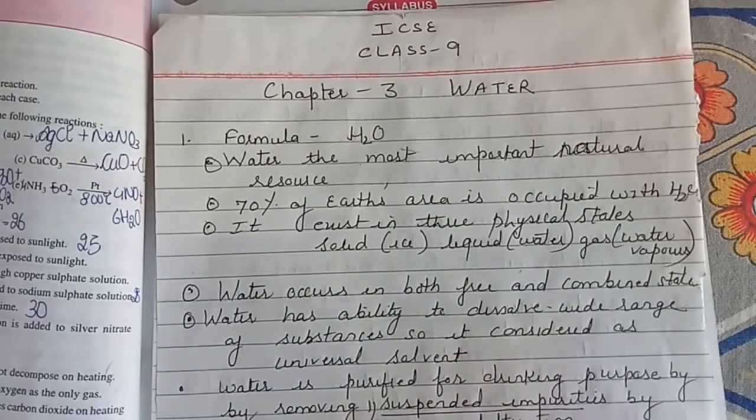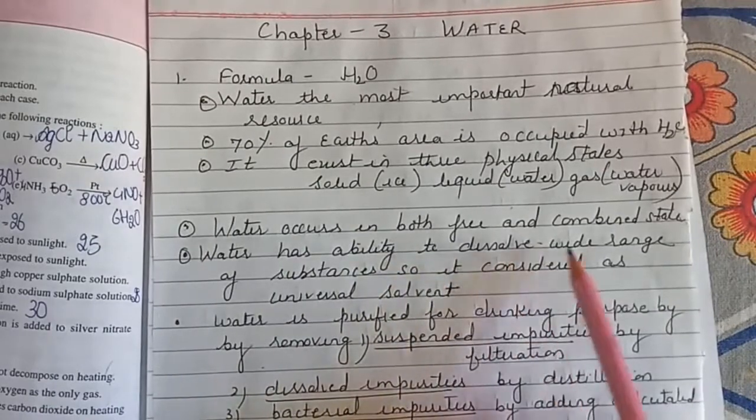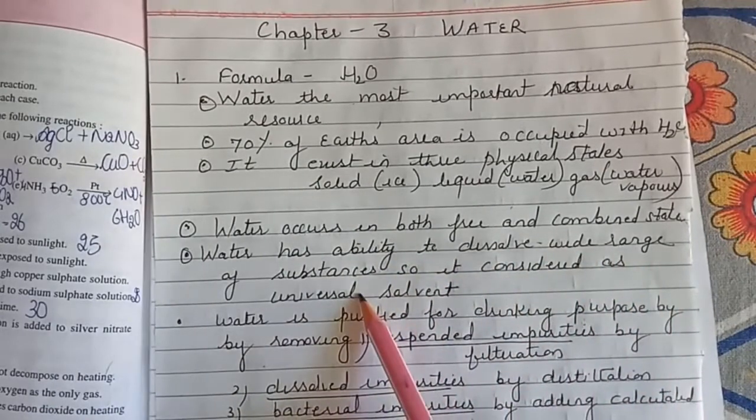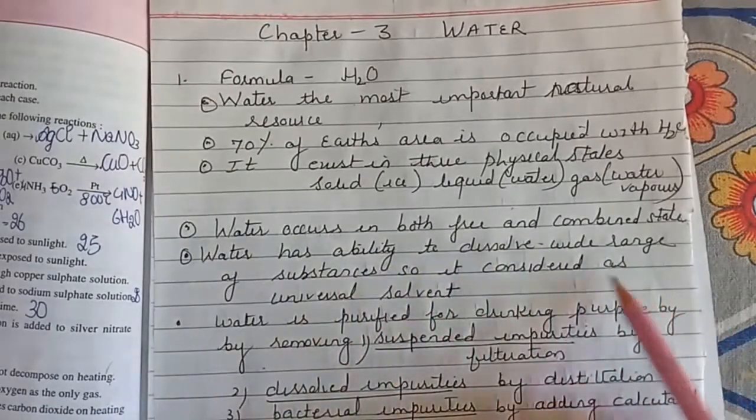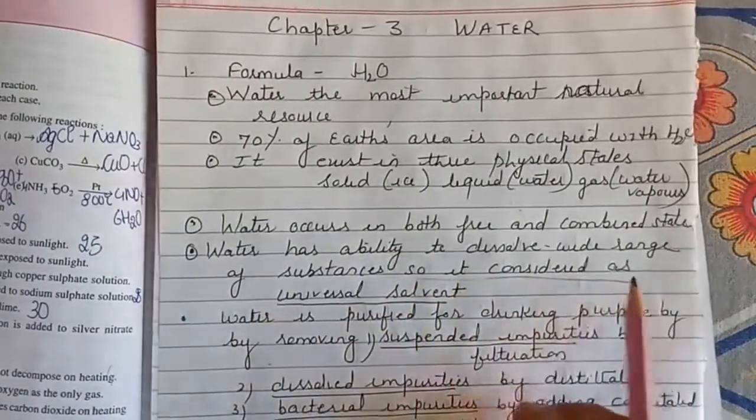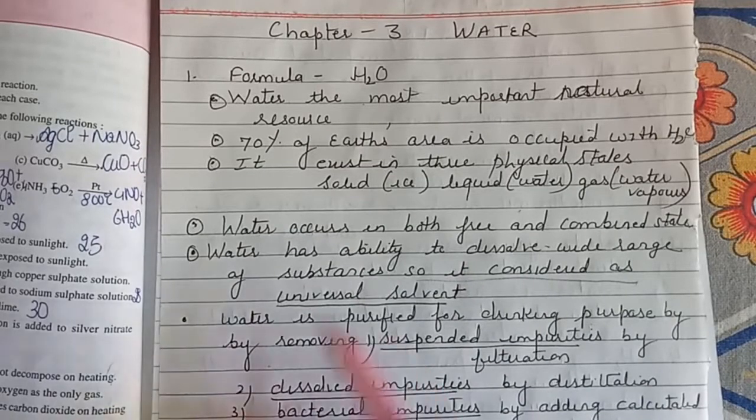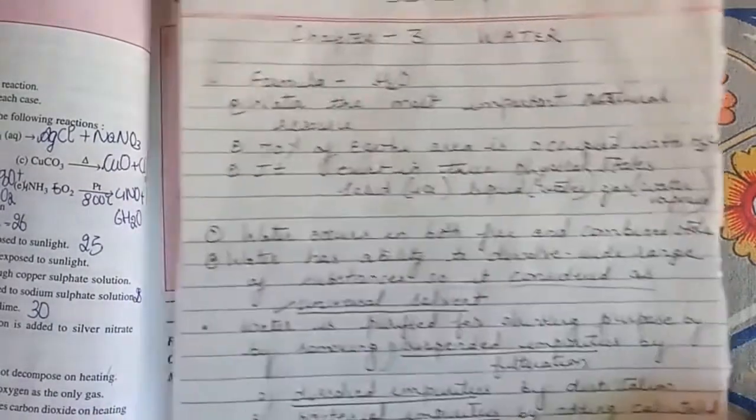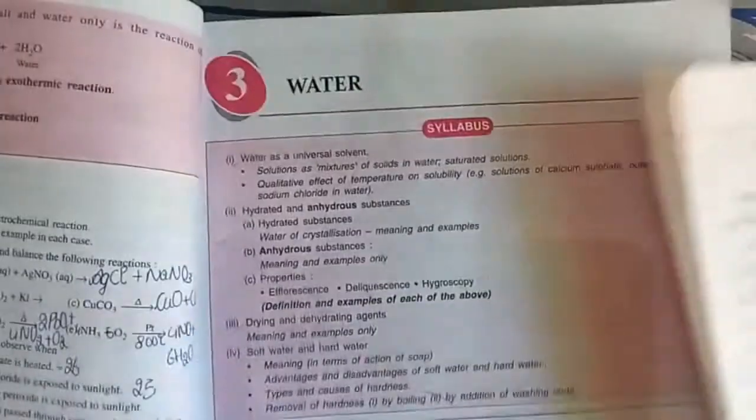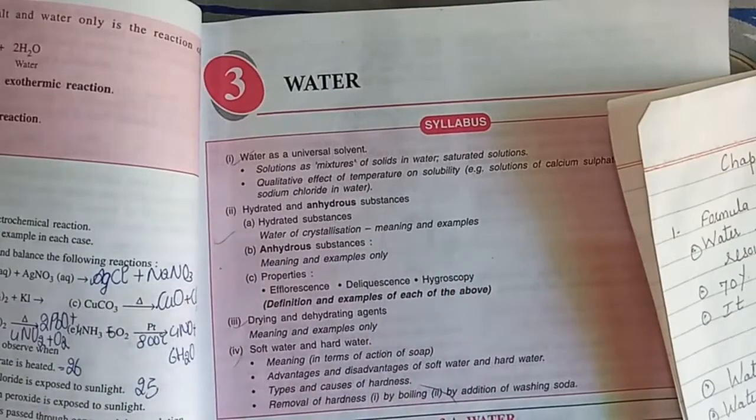Water occurs in both free and combined state. Water has the ability to dissolve a wide range of substances, so it is considered as a universal solvent. Many substances get dissolved in water, that is why it is known as the universal solvent. This is a major topic of this chapter, water as a universal solvent.